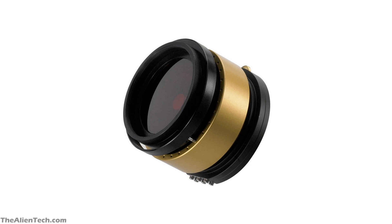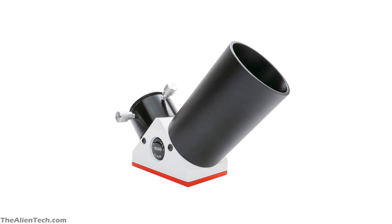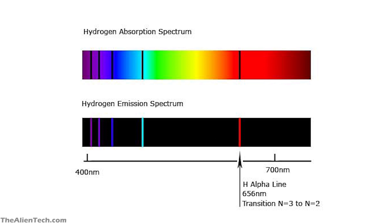After the etalon, there is a blocking filter in these telescopes. A blocking filter is essentially a cut-off filter — it's a combination of several filters designed to provide additional safety to the viewer and remove all out-of-band transmissions from the etalon, allowing only the transmission at 656.28 nanometers, also known as H-alpha, to pass.